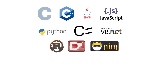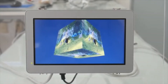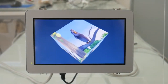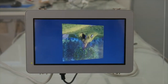Coupled with libraries and frameworks such as Qt, JavaFX, Electron, Node.js, and Mono, again just to name a few, makes the Comfile Pi a very powerful platform indeed. Thanks in part to the Broadcom VideoCore GPU, the Comfile Pi can even render real-time 3D graphics and multimedia.